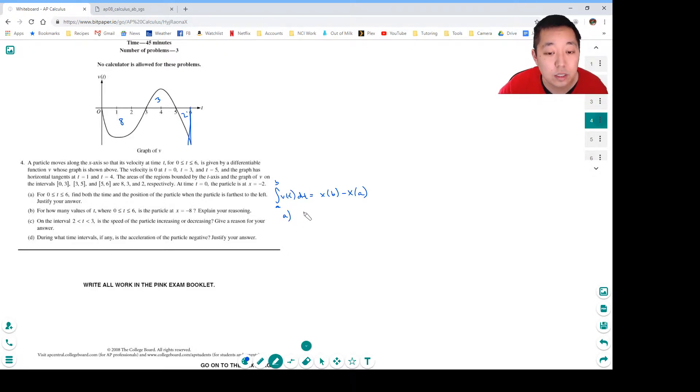The integral from 0 to 3 of v(t) dt is equal to x(3) minus x(0). So if we rearrange this, x(3) is equal to, well actually let me write it as, this is just filling in what we know.